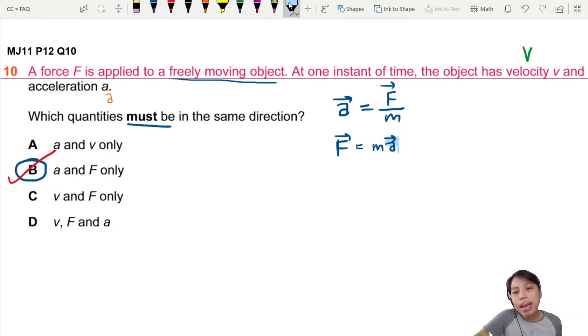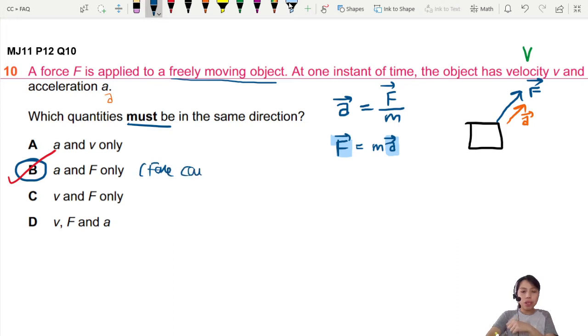So wherever a points to, F has to be pointing towards it. For example, if you have a box that is pulled this way with a certain force, it's a vector, so it has direction. This means acceleration must also be in that exact same direction because the force causes the acceleration. Force causes acceleration—they are linked.